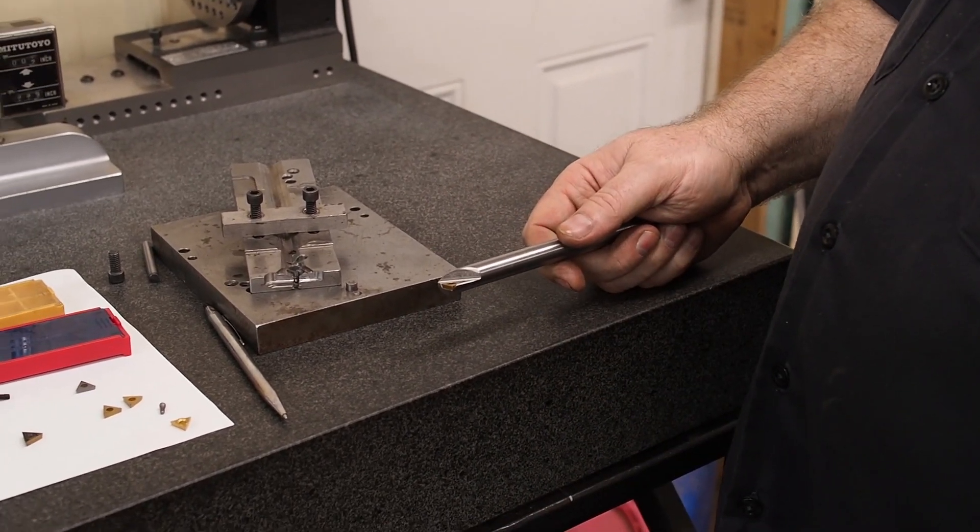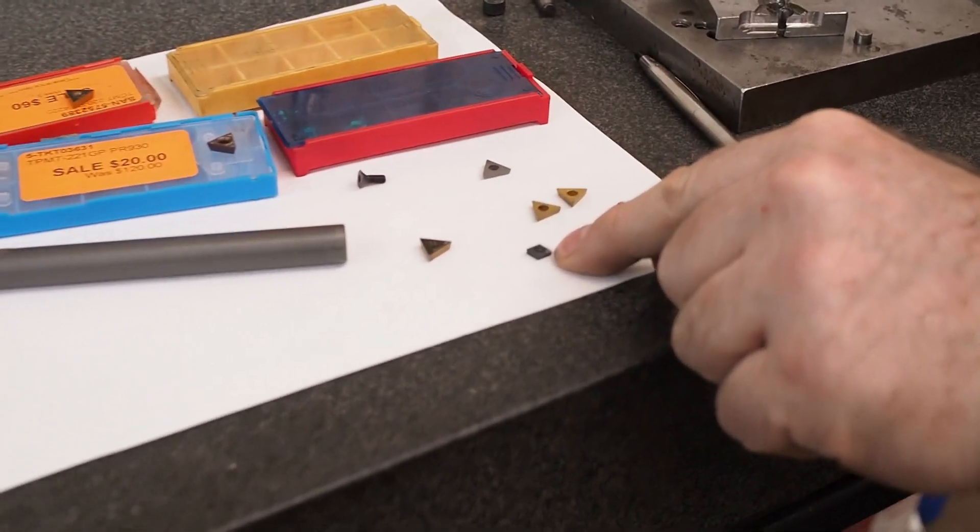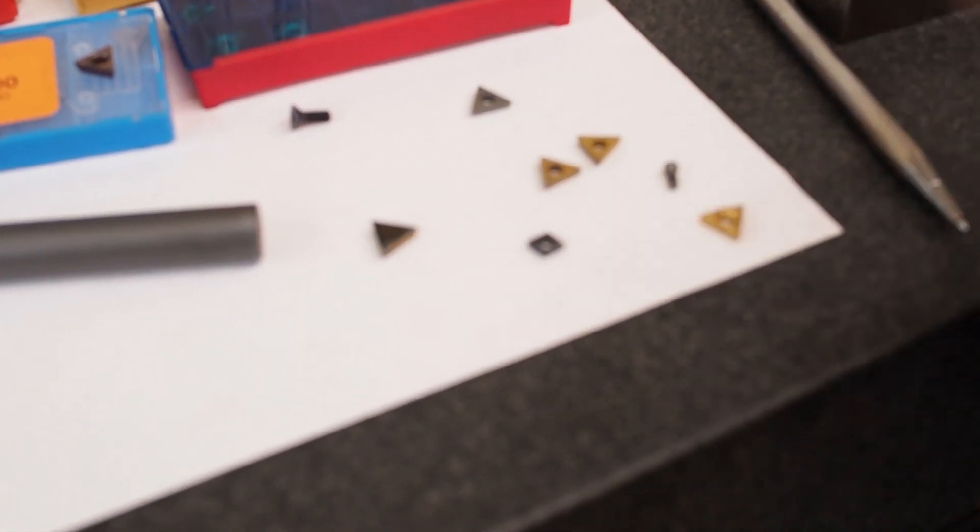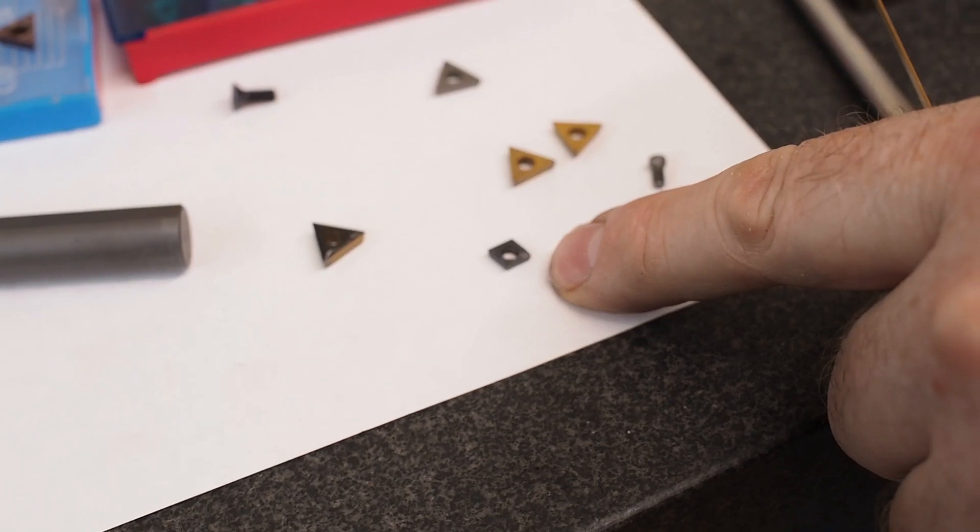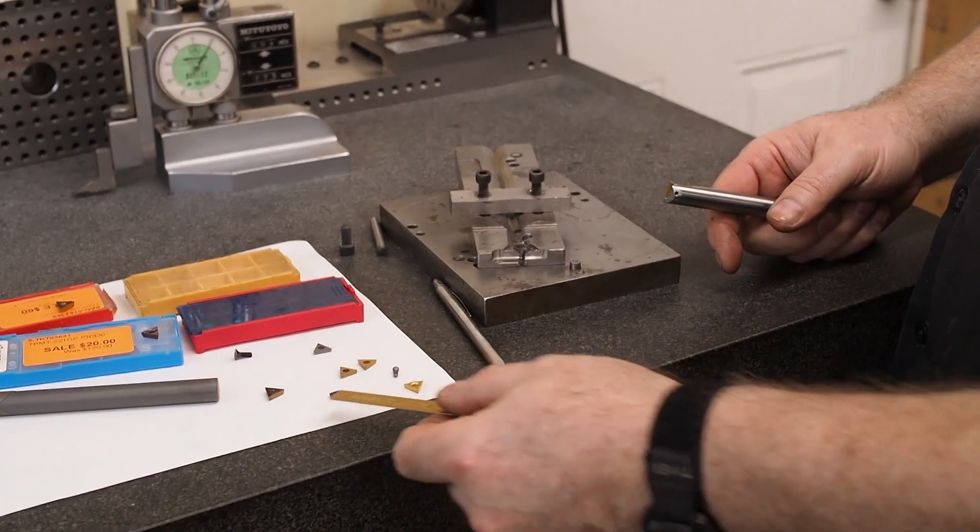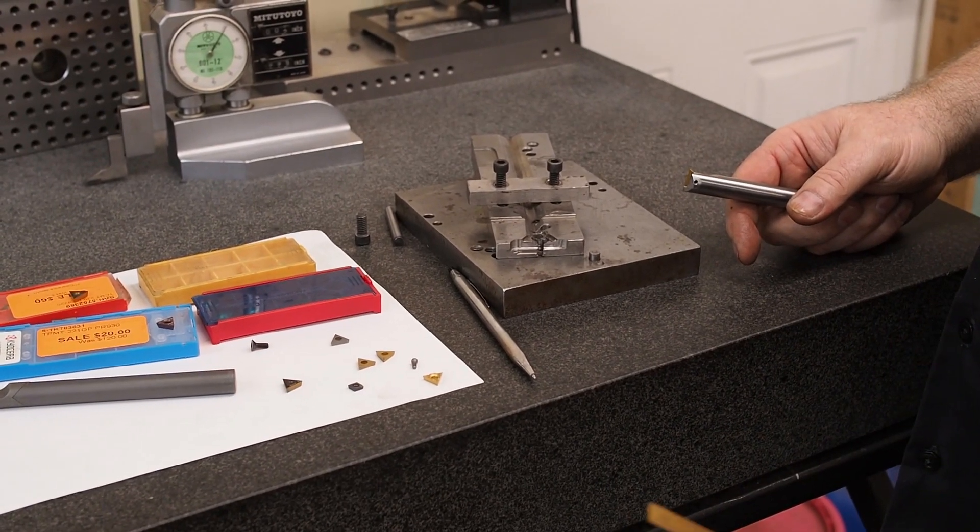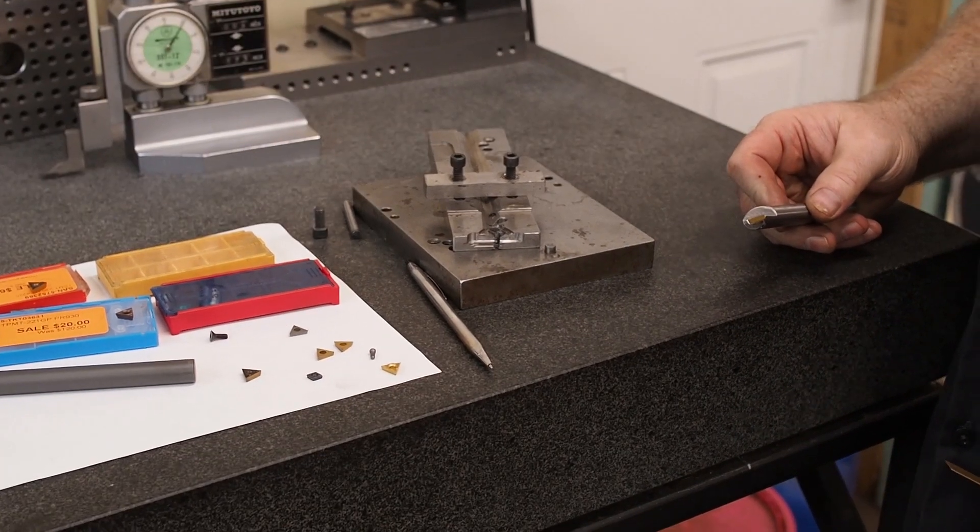So what we'll do now, well before we do that, I brought another common boring bar insert. This is an 80 degree diamond. Now this fixture is not set up to do that, but you can actually make your fixtures by putting your pivot point and your dowel pins and calculating that all. You can do just about any shape insert that you want. And if the 80 degree diamond is what you want, you can actually make a fixture that will pivot to the right pocket angles for that and you can go from there.